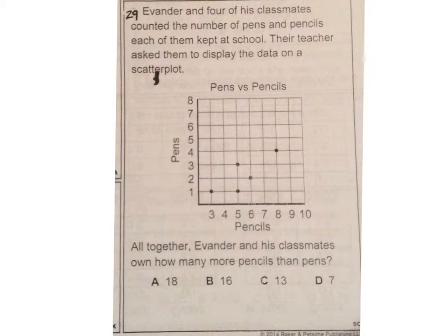Number 29. Evander and four of his classmates counted the number of pens and pencils each of them kept at school. Their teacher asked them to display the data on a scatter plot. Pens versus pencils. We have pens going on our y-axis and pencils on our x. Altogether, Evander and his classmates own how many more pencils than pens?